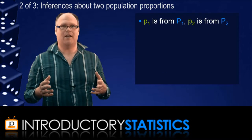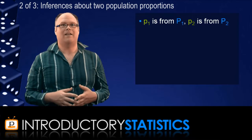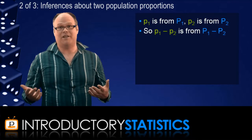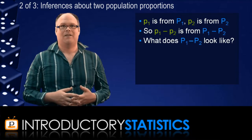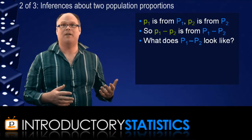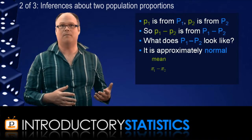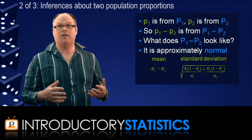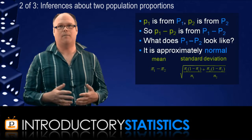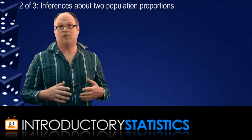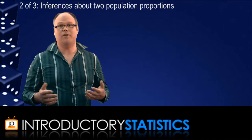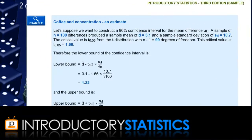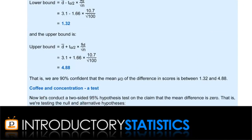Little p1 is a sample proportion from the distribution p1, and similarly little p2 comes from the distribution p2. Using some theory from an earlier video, we can say that p1 minus p2 is approximately normal with mean pi1 minus pi2 and standard deviation given by the standard formula. That is what is going to help us estimate or test pi1 minus pi2. It's assumed throughout that your two samples are collected independently. In the Pedisco textbook, there is a section on comparing two means when the samples aren't independent.